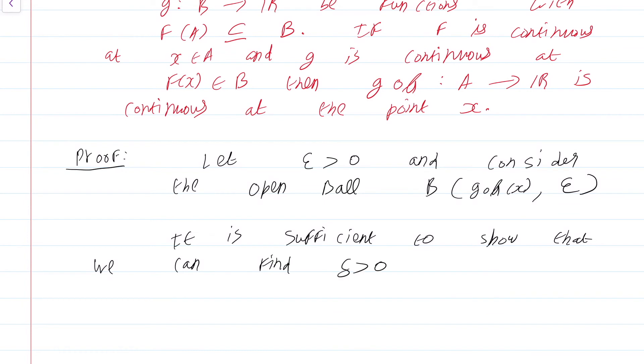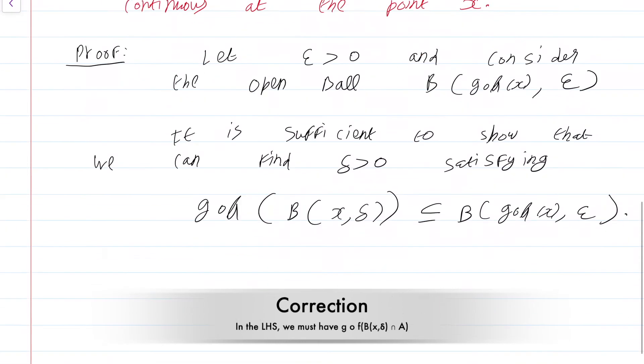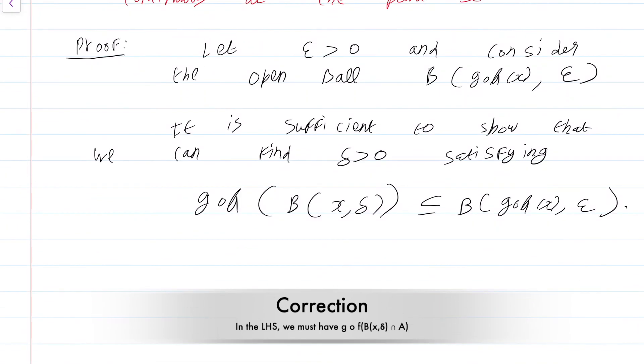Now, by the various characterizations of continuity that we have seen along with properties of limits, it is sufficient to show that we can find delta greater than 0 satisfying g∘f(B(x, δ)) is fully contained in B(g∘f(x), ε). If we can do this then we are done.